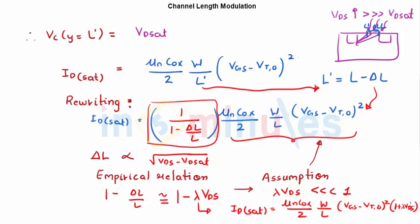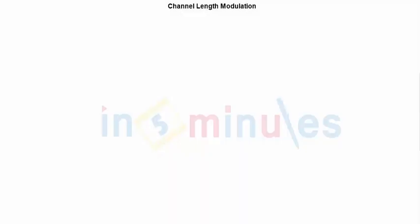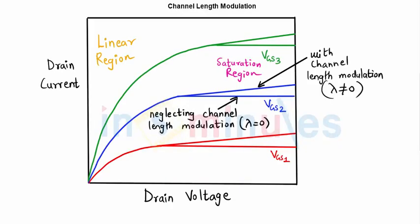Due to channel length modulation, the current increases by a factor of (1 + λ·VDS). When λ equals 0 or channel length modulation is neglected, the current was constant. But with channel length modulation, the current increases as shown in the graph. This is channel length modulation — stay tuned for further clips, and thank you very much.